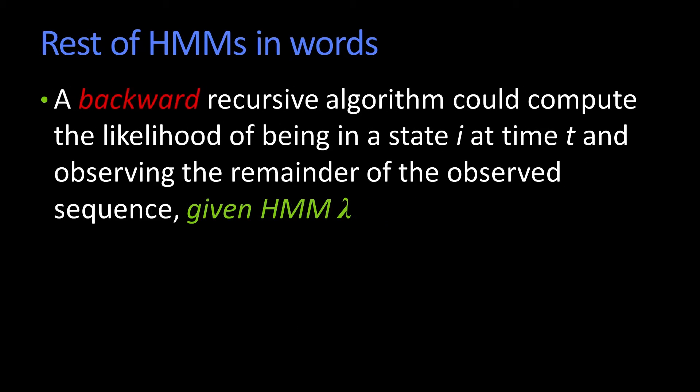You can similarly define a backward algorithm. It starts from the back and goes backwards instead of the front, and it's a recursive algorithm that computes the likelihood of being in state i at time t and seeing the remainder of the observations, given the HMM.